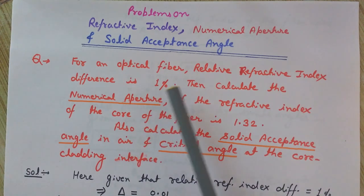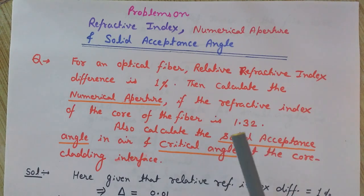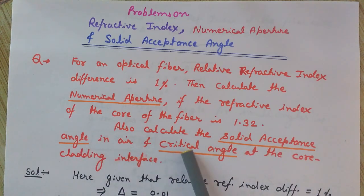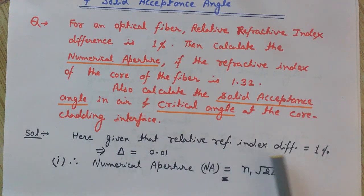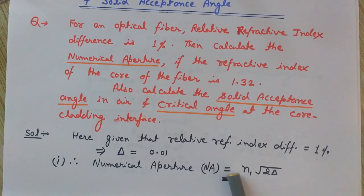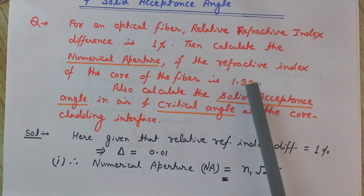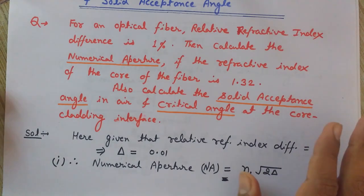We have been given the relative refractive index difference as 1%, and the refractive index of the core. We want to calculate three things: first, the numerical aperture; second, the solid acceptance angle; and third, the critical angle. The relative refractive index difference delta is 1%, so delta equals 0.01. The numerical aperture NA is given by the formula NA = n1 × √(2Δ), where delta is 0.01 and n1 is the refractive index of the core, which is 1.32.